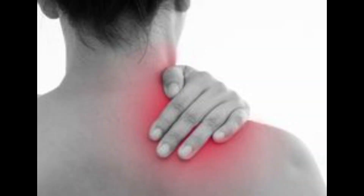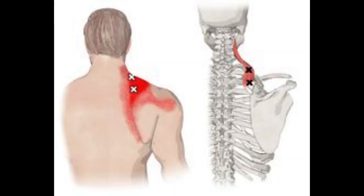Common symptoms of trigger points in the levator scapulae muscle include pain and tenderness. Trigger points can cause localized pain and tenderness in the muscle. The pain may be felt in the neck, along the edge of the shoulder blade, and sometimes radiating up into the head.